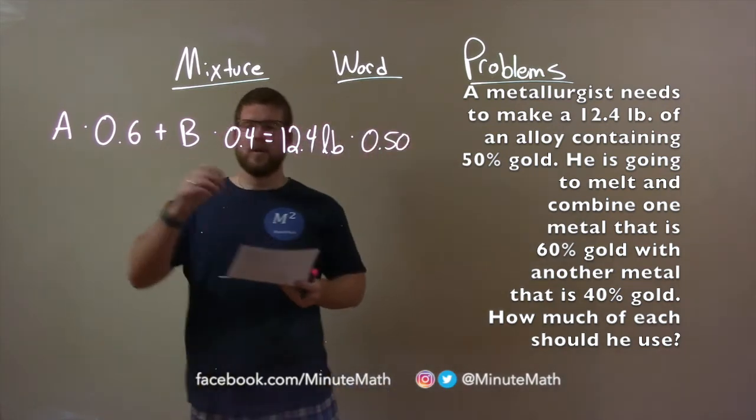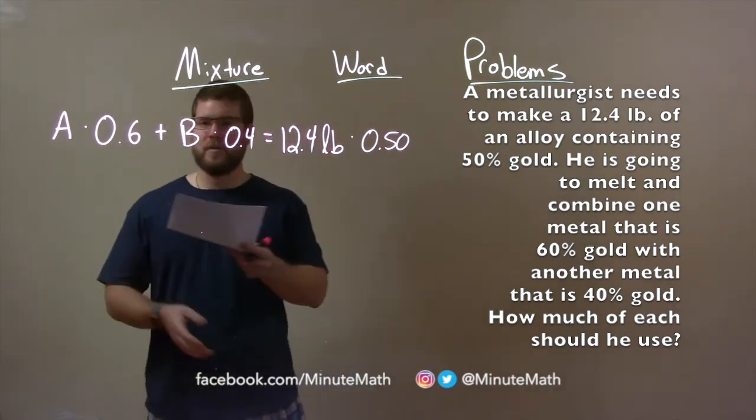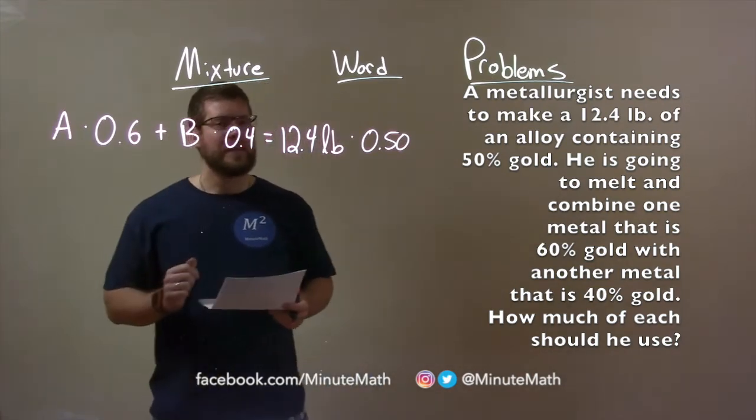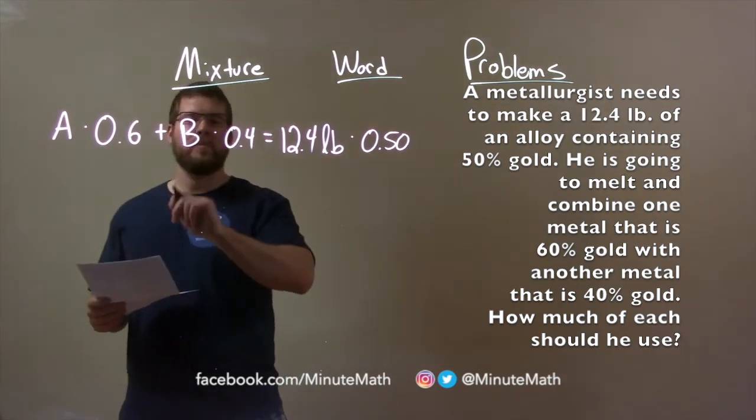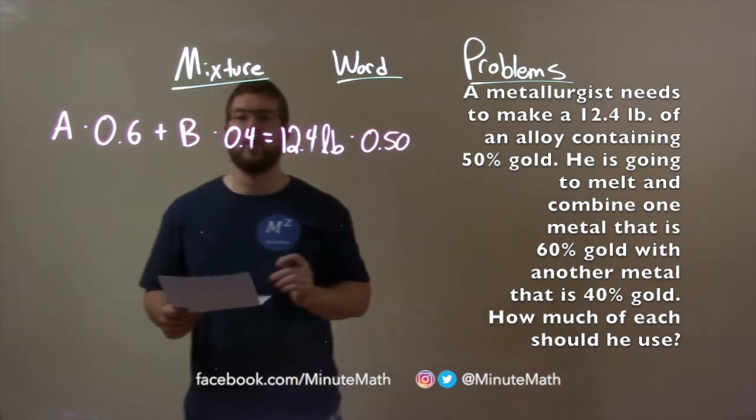Well, we have an equation here, but we have two variables, and I know I can't simplify or solve for any one of these variables specifically without a second equation. So, we need to make another equation, which I'll put up here. One thing we know is A plus B, the pounds of our metals combined, is a total of 12.4.